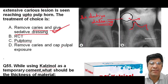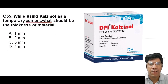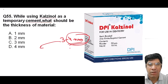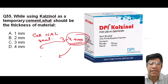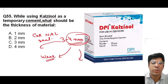Root canal treatment is indicated when there is irreversible damage to the pulp, such as pulp exposure due to caries or trauma. When giving calcium hydroxide temporary cement, the minimum depth of 3 to 4 mm is recommended around the periphery of the restoration. This thickness is required to ensure adequate coronal seal and to compensate for wear. It is important to ensure the material is at least 3 to 4 mm thick in the cingulum area to provide adequate support and sealing.